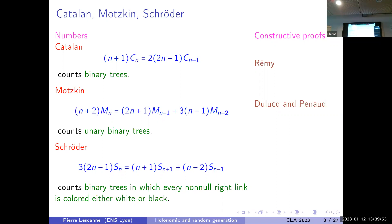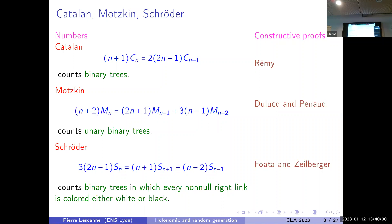The third kind of proof is for the so-called Schröder trees, due to Dominique Fusy and Doron Zeilberger, who is not here. It counts binary trees in which every non-null edge is colored either white or black. Like all the other kinds of formulas, they count also other kinds of combinatorial objects, but for this talk I consider only the aspect related to binary trees.